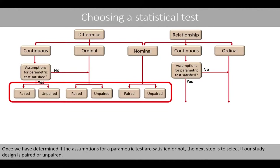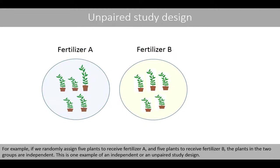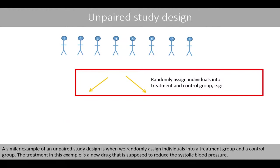Once we have determined if the assumptions for a parametric test are satisfied or not, the next step is to select if our study design is paired or unpaired. For example, if we randomly assign five plants to receive fertilizer A and five plants to receive fertilizer B, the plants in the two groups are independent. This is one example of an independent or unpaired study design. A similar example is when we randomly assign individuals into a treatment group and a control group.